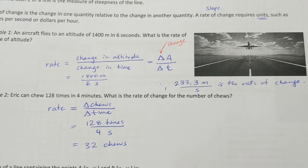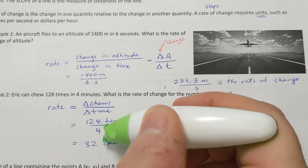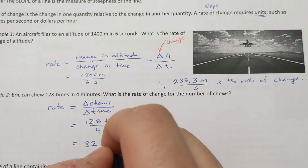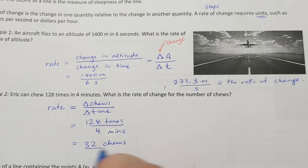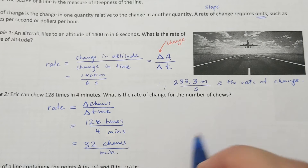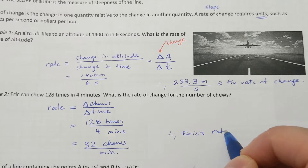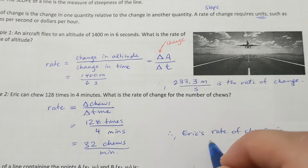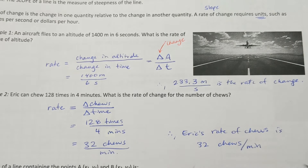I made a mistake there — it shouldn't be seconds, it should be minutes. Apologies; 128 times per four seconds would be pretty fast! So 128 times per four minutes gives us 32 chews per minute. Therefore, Eric's rate of chews is 32 chews per every one minute.